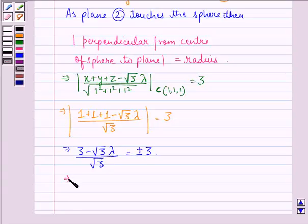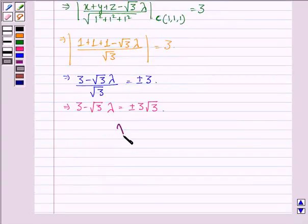This implies 3 - √3λ = ±3√3. Hence λ = √3 ± 3.